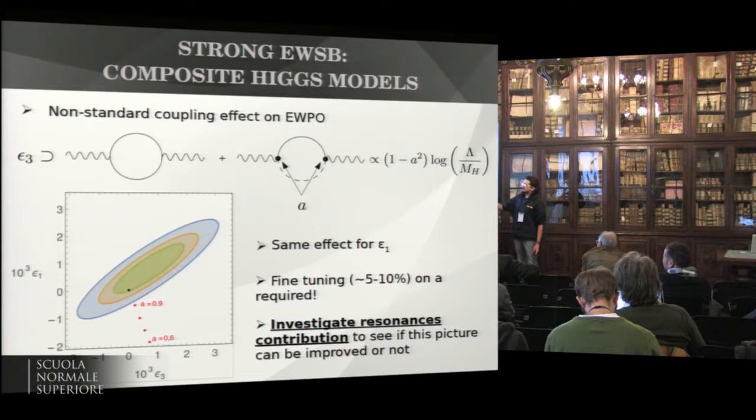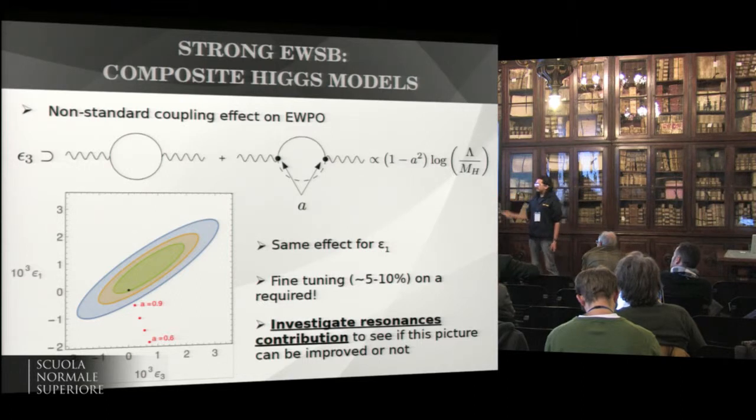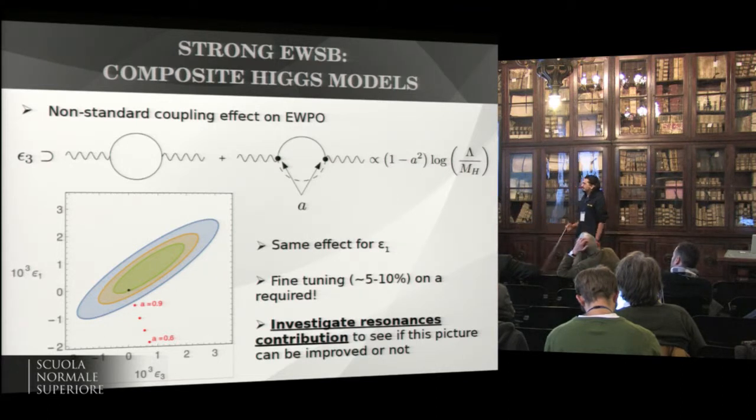The same effect we have for epsilon-1, and this is the result on the experimentally allowed region. The black dot is the standard model prediction, and the red is where you go if you rescale. You see, the effect is very bad, especially on epsilon-1, and it requires some fine-tuning on this rescaling of the order of 5% to 10%. It is relevant to investigate the resonance's contribution to see if this picture can be improved or not.